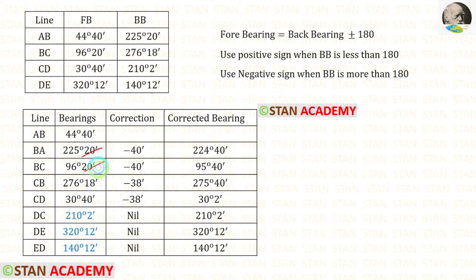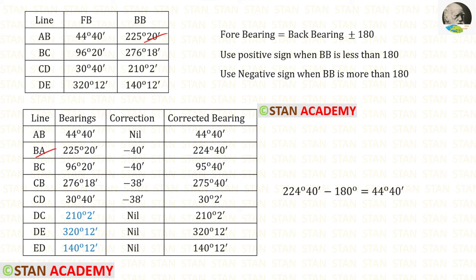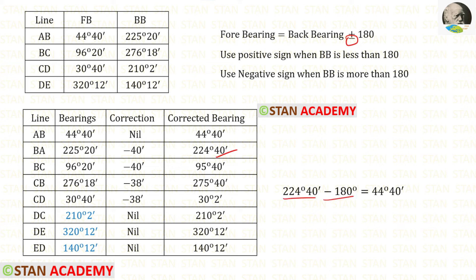We know that these two readings are taken at the same station B, so the same correction should be applied here. 225 degrees 20 minutes minus 40 minutes gives us 224 degrees 40 minutes. We know that BA is the backbearing of AB. Using this formula we can find the forebearing of AB. Since it is more than 180, we have to use the negative sign in the formula. 224 degrees 40 minutes minus 180 degrees gives us 44 degrees 40 minutes — the same as the original reading. So there is no correction required here. We know that this reading is taken at station A, so station A also is free of local attraction.